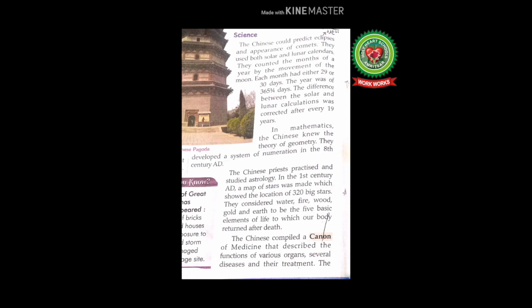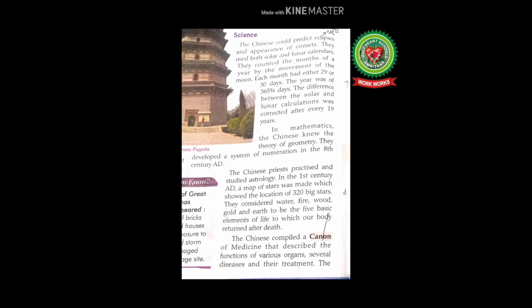Geometry is the branch of mathematics that deals with shapes and sizes of figures, and numeration means the method of expressing a number in words. Chinese priests practiced and studied astrology. In the first century AD, a map of stars was made which showed the location of 320 big stars.